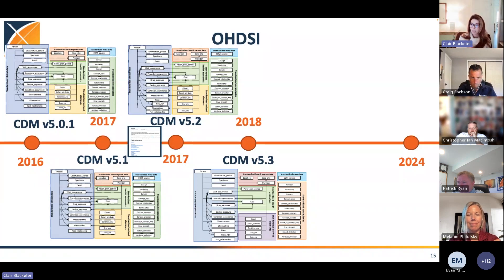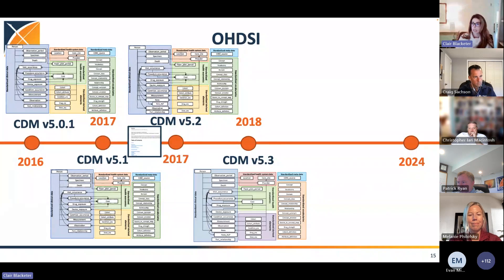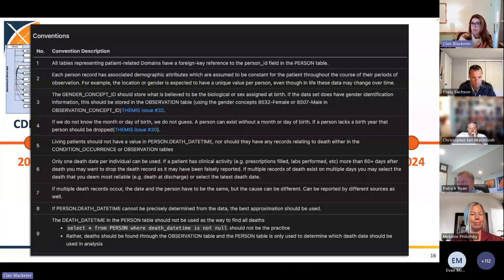This was a very stable version. We learned from 2016 through 2017 that those very quick, rapid changes to the CDM are helpful for us in the CDM working group, but not great for the community — especially as we saw the advent of Aetion and some of these really large federated networks relying on the OMOP common data model. The faster we made changes, the harder it was for our software developers to keep up, and the harder it was for these large federated networks to keep up.